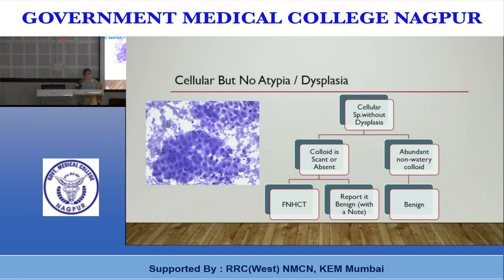The minimum criterion is cellularity. If cellularity is sparse — only a few Hürthle cells — place it in the AUS category. A cellular specimen without dysplasia and with abundant non-watery colloid qualifies as benign. If colloid is scant or absent, some would place it as follicular neoplasm Hürthle cell type, while others would report it as benign with a note about the possibility of Hürthle cell neoplasm.